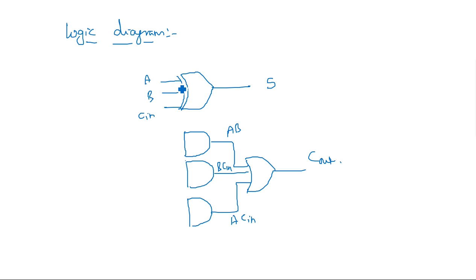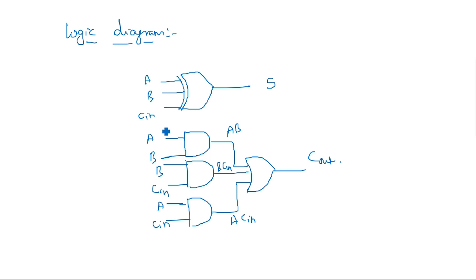We draw the vertical lines from the already existing inputs A, B, Cin — separate input lines are not required; you can just draw from the same inputs. This is the way of representing a logic diagram using the K-map. The purpose of the K-map is to design any logical expression in a minimal format. In this example we discussed how the logic diagram for the full adder can be represented using expressions derived from K-maps.